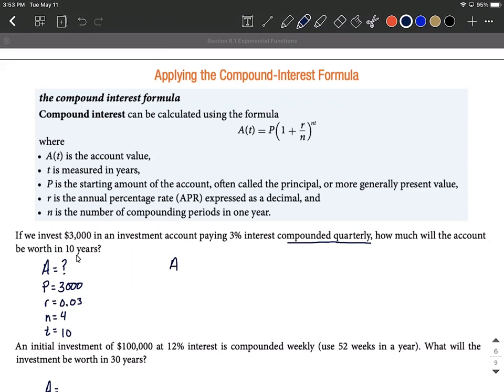A of 10 equals 3,000 times the quantity 1 plus 0.03 divided by 4, raised to the 4 multiplied by 10 power.